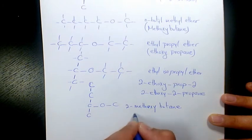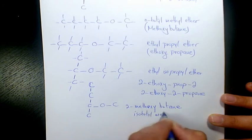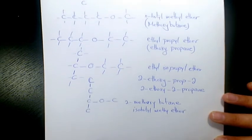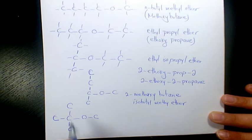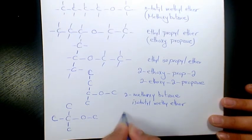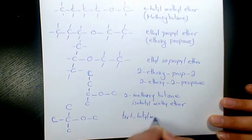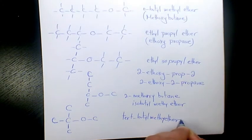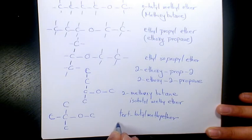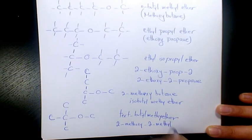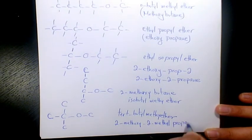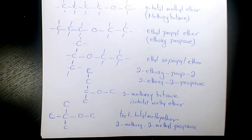And the last one we can have something like this, and that will be tert-butyl methyl ether, or that's going to be 2-methoxy-2-methylpropane. So basically these are going to be all the isomers of C5H12O or pentanol. I hope you enjoyed this video — please leave me a comment if you have any question. Thank you for watching and have a great day.